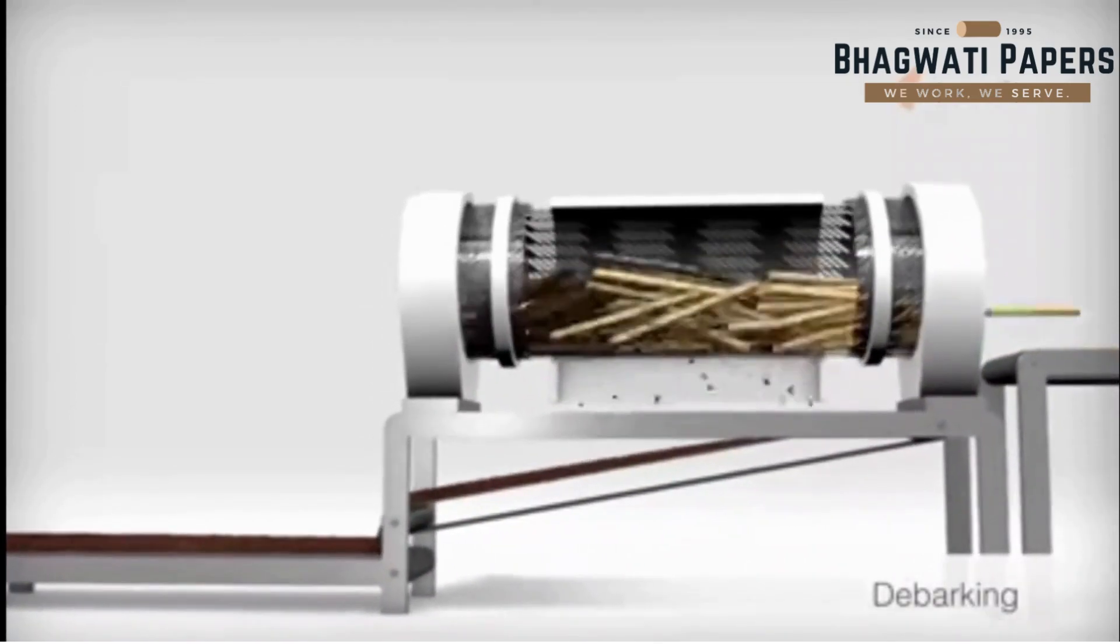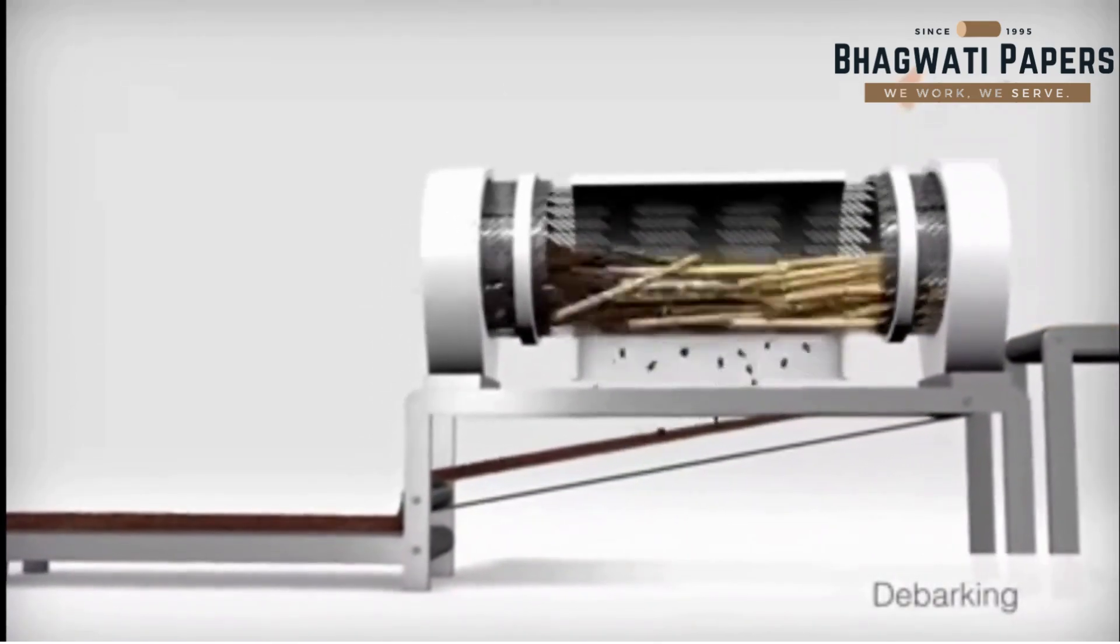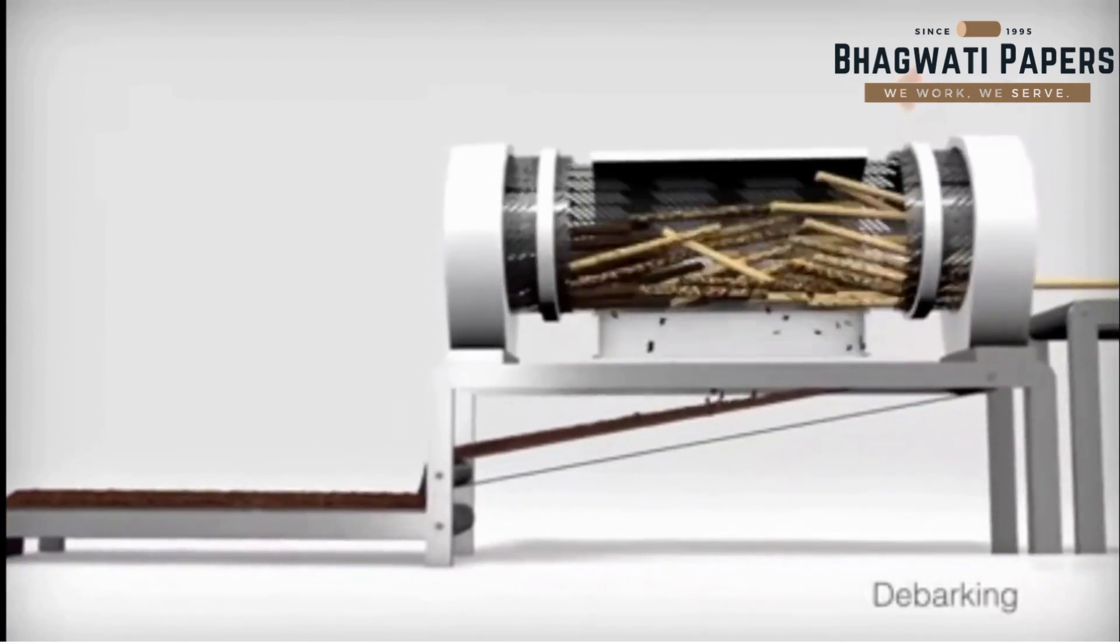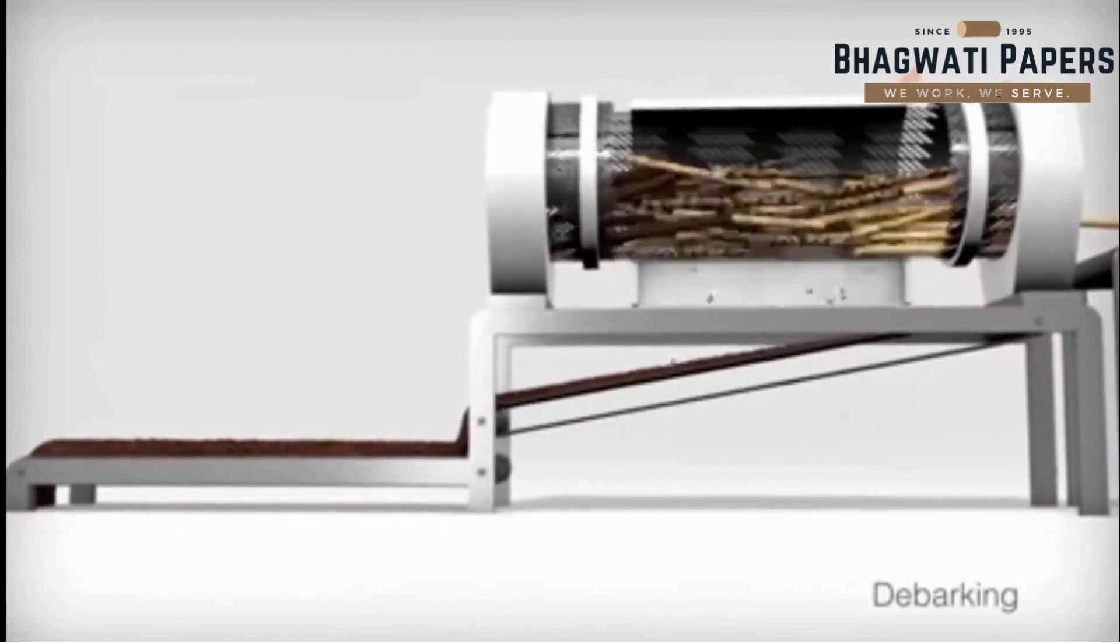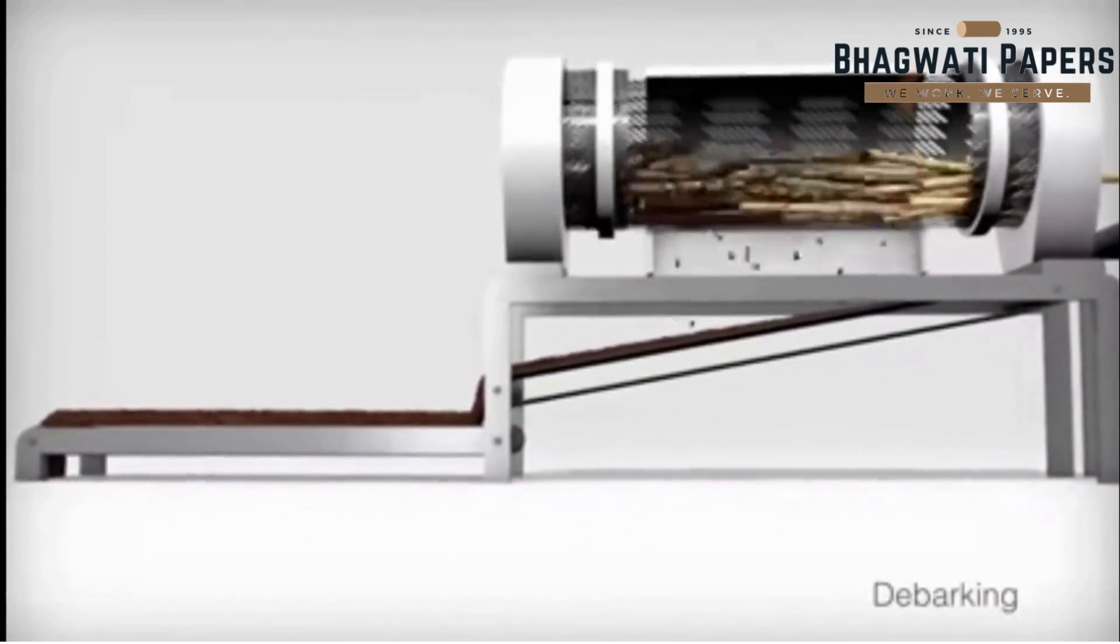The removed bark falls through slits in the wall of the debarking drum onto a conveyor belt, which carries it away for storage prior to burning in a bark boiler to generate electricity.